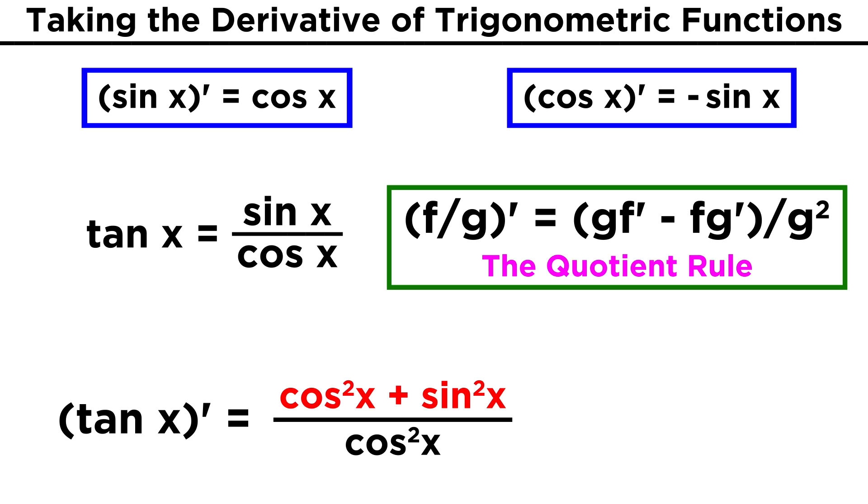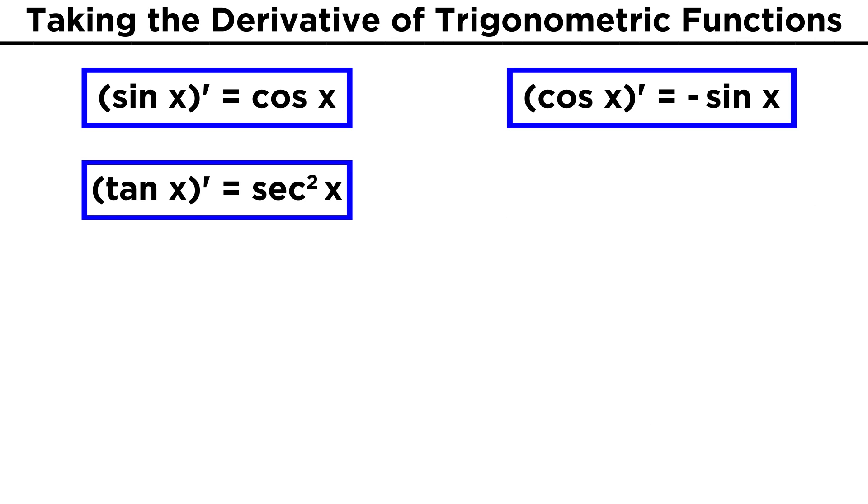Let's quickly recall our Pythagorean identity, which tells us that sine squared plus cosine squared equals one, so this becomes one over cosine squared, and using the definition of secant, we can express this as secant squared. So the derivative of tangent x is secant squared x.